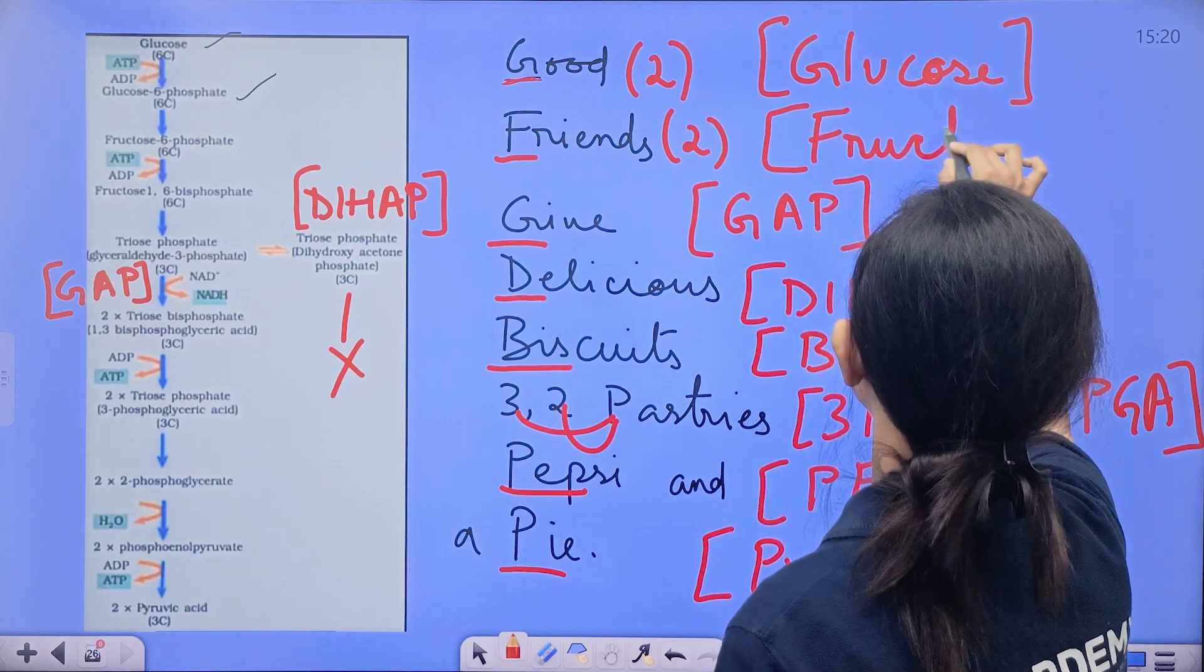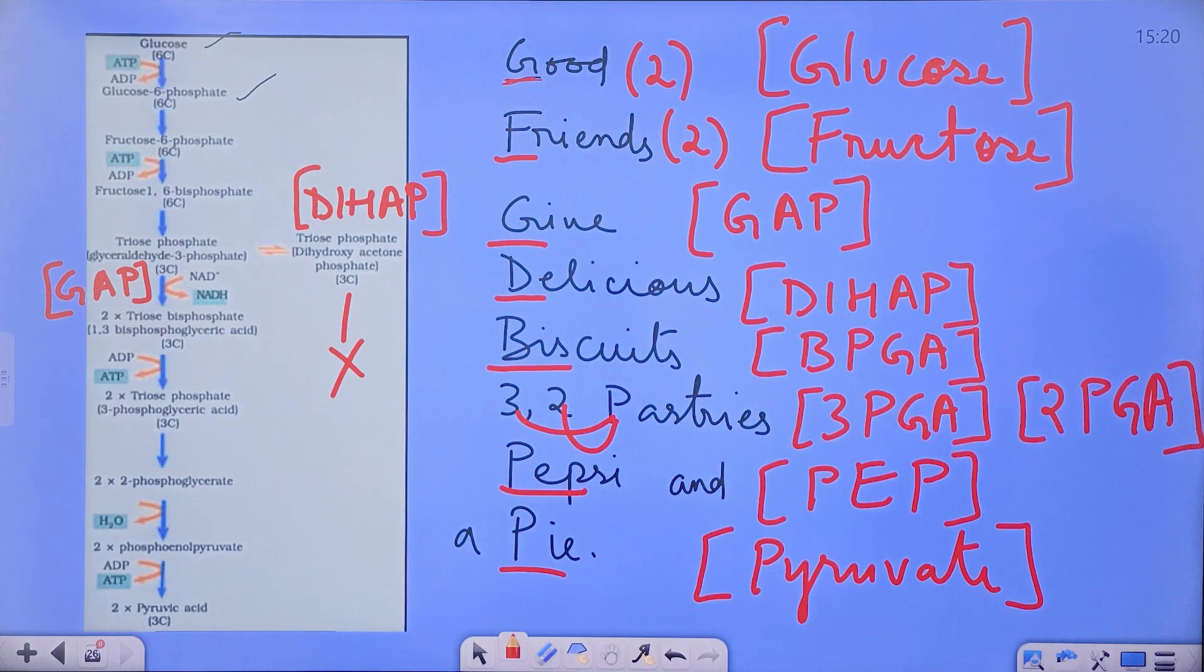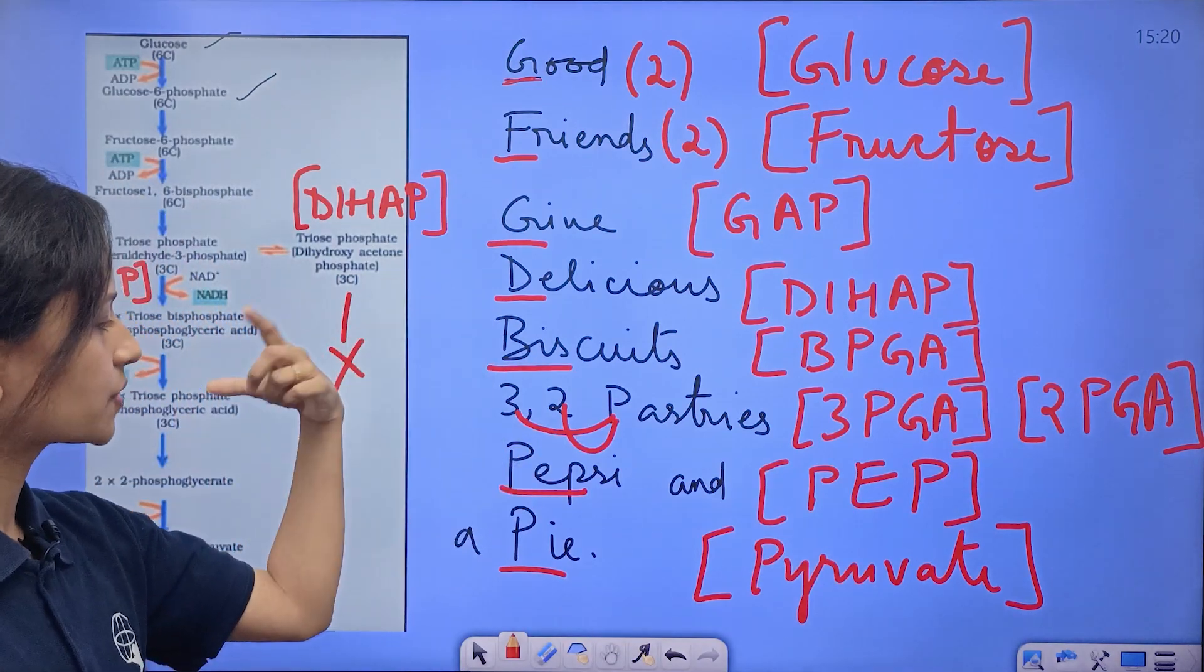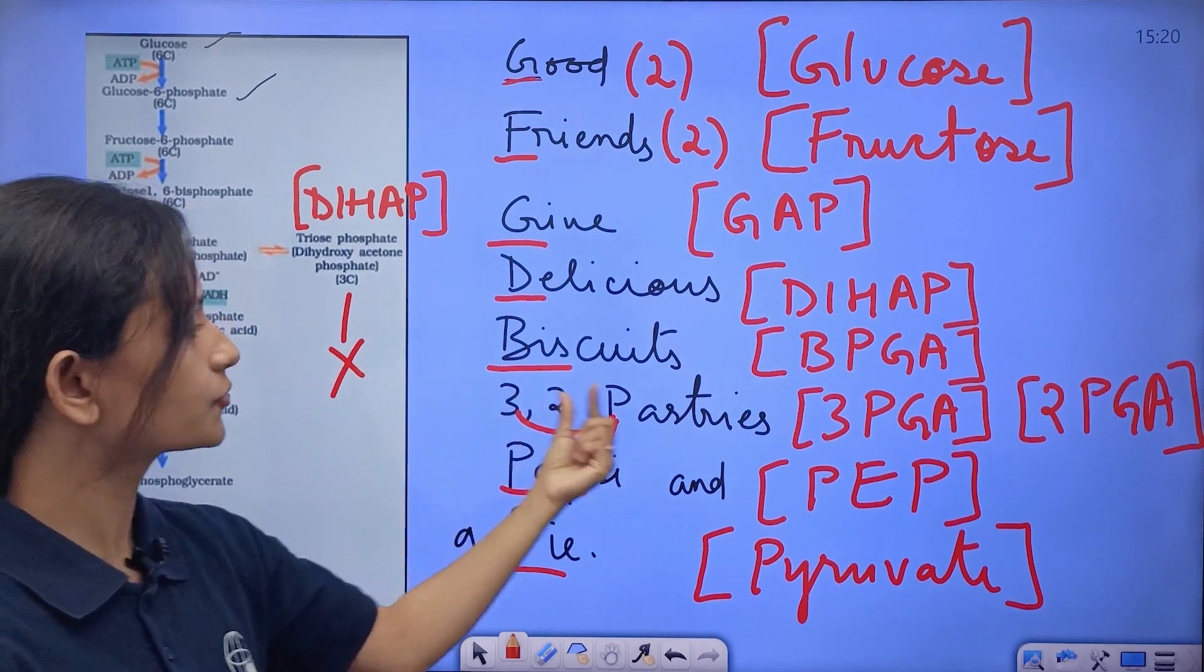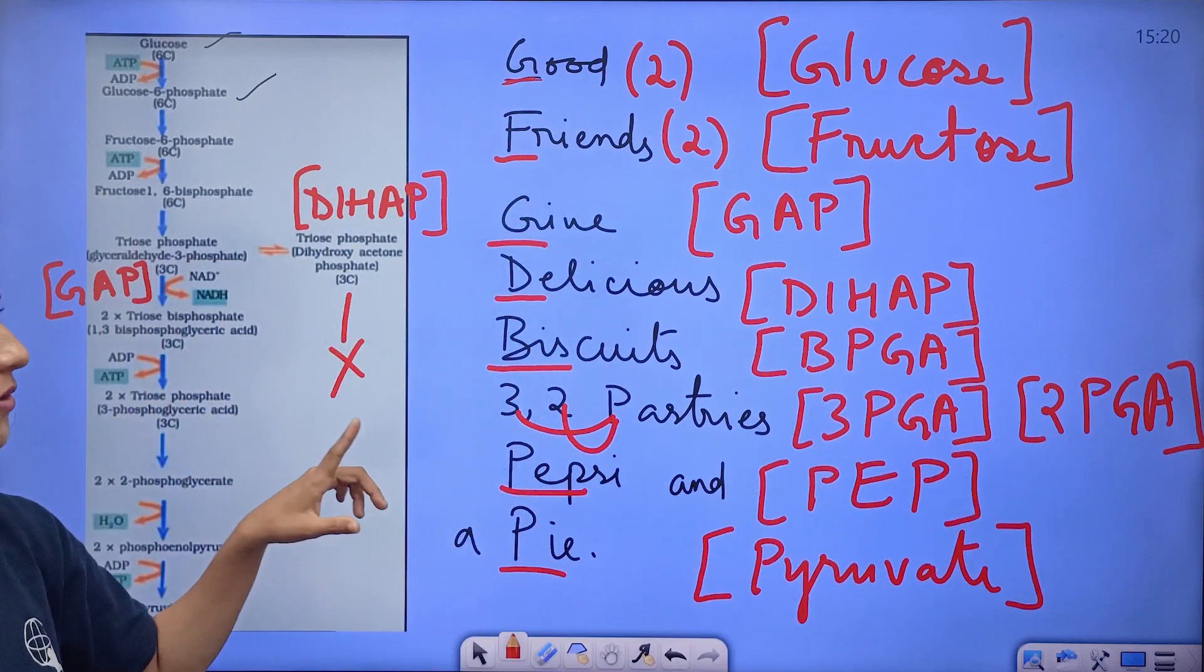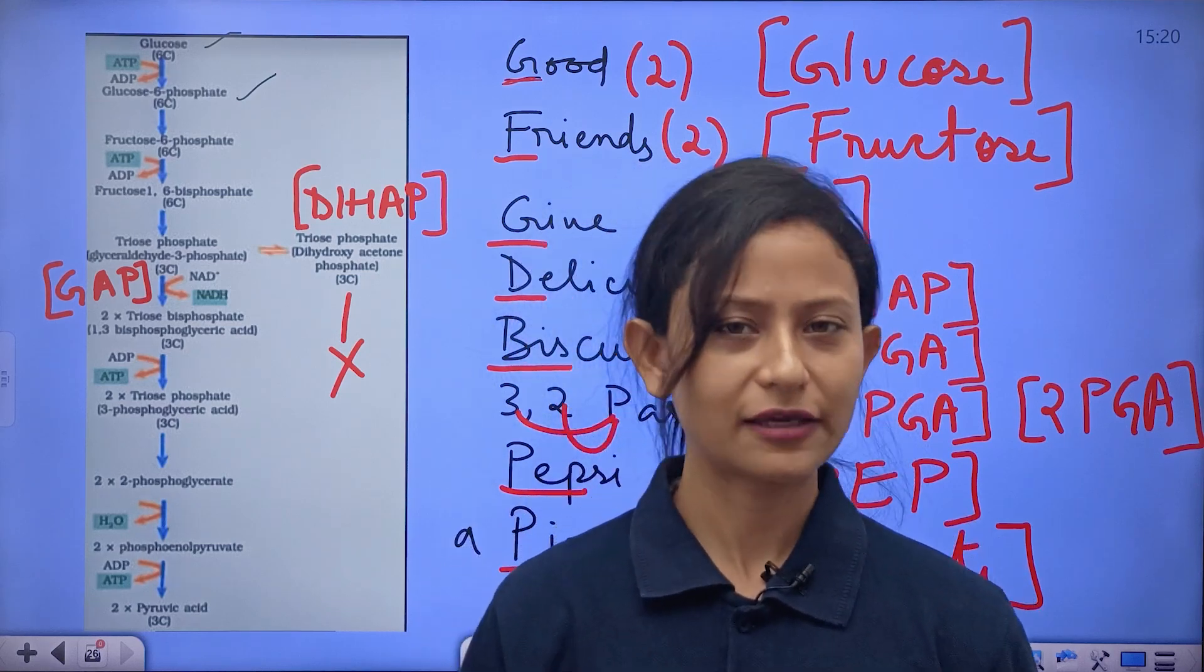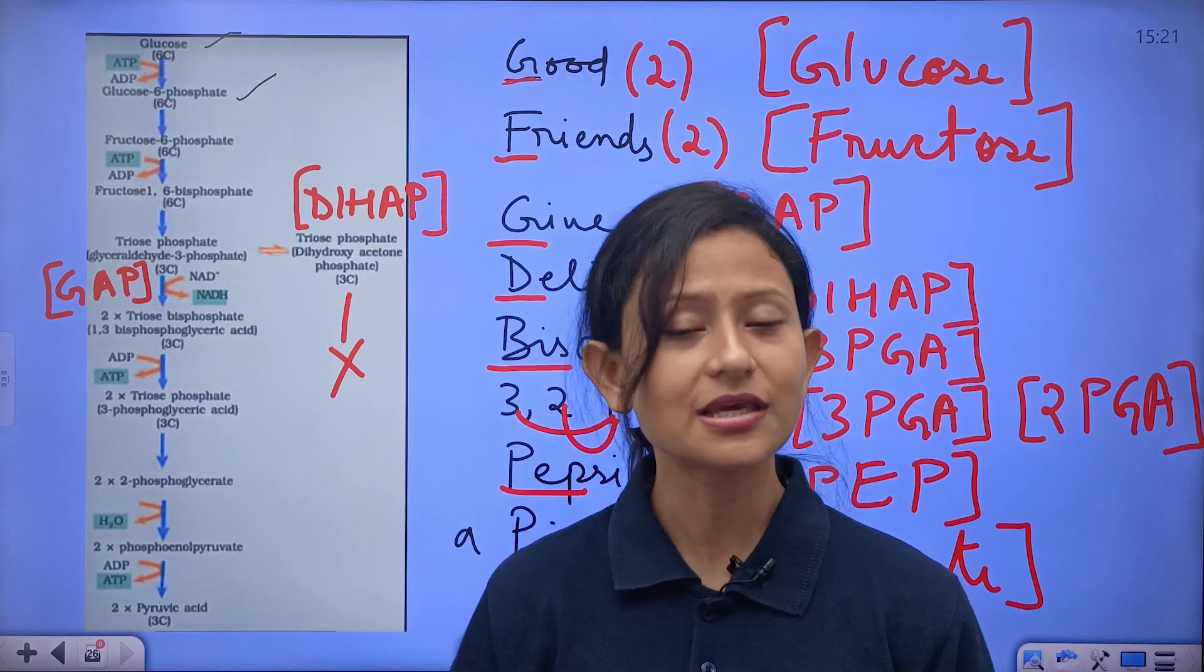Now let us recall one more time: good friends give delicious biscuits, 3,2 pastries, Pepsi and a pie. Why have I written 3 before 2? Because first we have 3PGA, then we have 2PGA. 3PGA gives 2PGA, that's why 3,2 pastries. Now just one time, just say with me: good friends give delicious biscuits, 3,2 pastries, Pepsi and a pie.